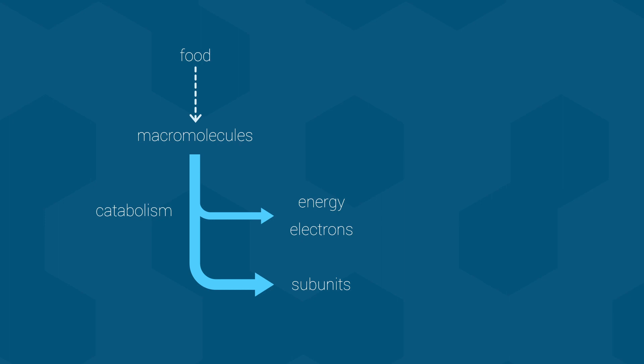Or, at the very least, we will make a big deal about these electrons during Biology 112 lecture. Moving on, the second half of metabolism involves taking the energy, electrons, and subunit molecules and combining them into new macromolecules that the organism needs. This half of metabolism is known as anabolism. Eventually, every organism becomes food for another organism, and the cycle repeats itself.